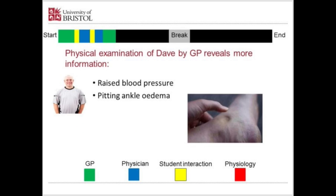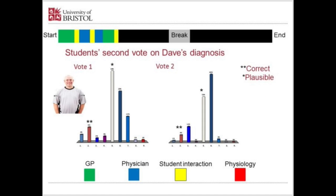We then reveal more information about Dave. The GP does a physical examination showing raised blood pressure and pitting ankle oedema. The students vote again on Dave's diagnosis, and you can see a shift in the profile with this additional information — they're factoring it in — but not many are getting towards option two yet, which is entirely understandable.